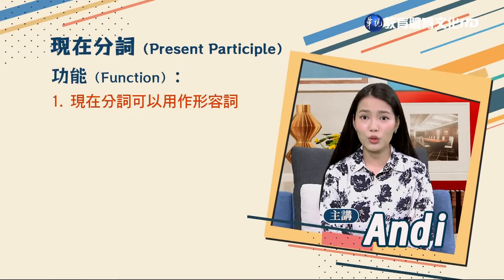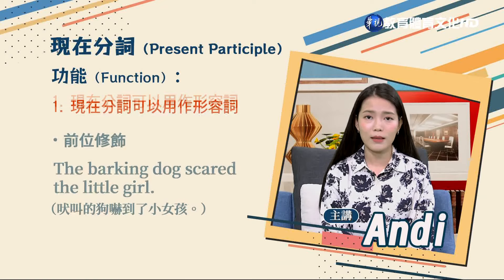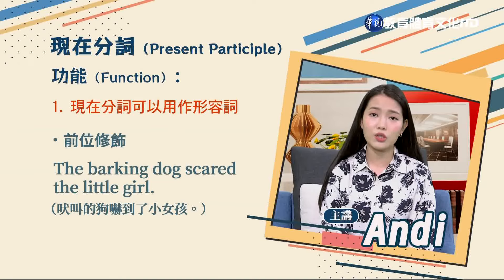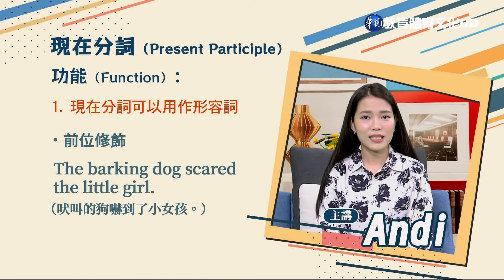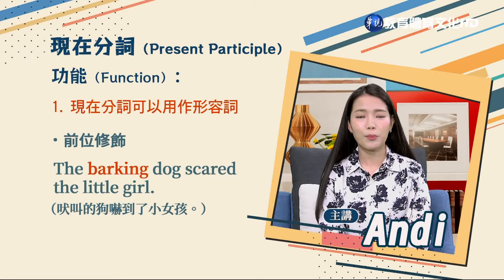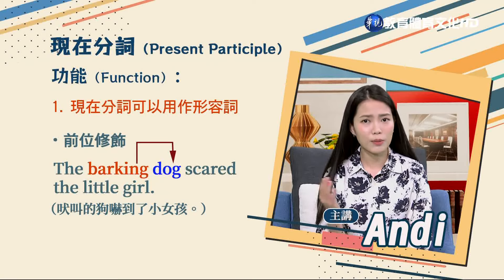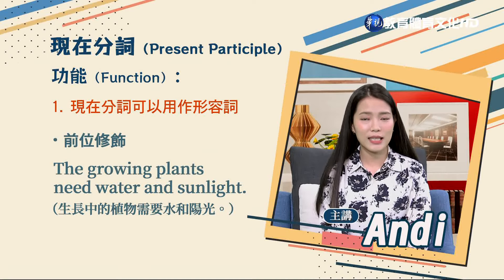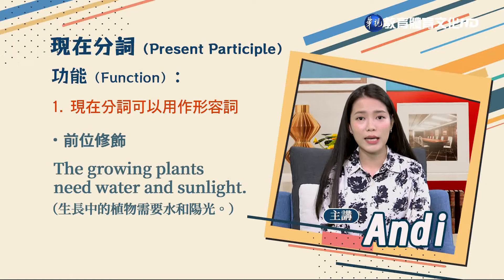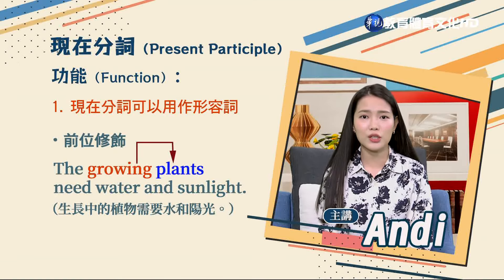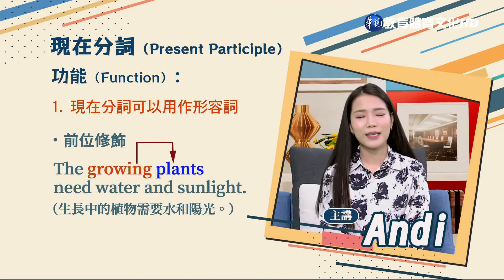首先它可以用作形容詞，也就是去修飾名詞或者是代名詞，通常表示主動或者是動作進行中。當形容詞的時候分兩種：前位修飾和後位修飾。前位修飾例句：「The barking dog scared the little girl.」吠叫的狗嚇到了小女孩。這裡現在分詞barking修飾名詞dog，描述正在吠叫的狗。「The growing plants need water and sunlight.」生長中的植物需要水和陽光，growing修飾名詞plants。